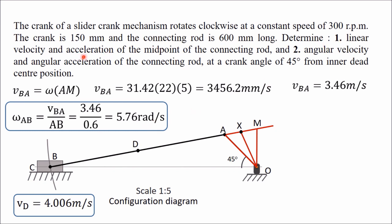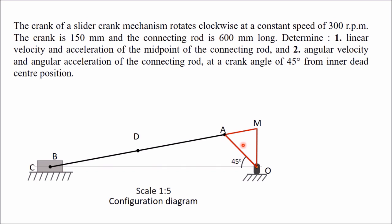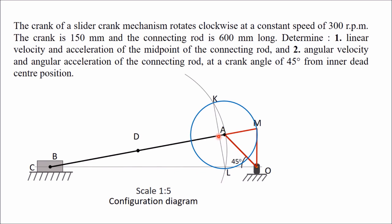For the acceleration diagram, draw a circle with A as center and AM as radius. Then with D as center and DA as radius, draw an arc intersecting the circle at K and L. Join K to L — this intersects the connecting rod at Q and the slider path at N. Join O to N, N to Q, Q to A, and A to N.